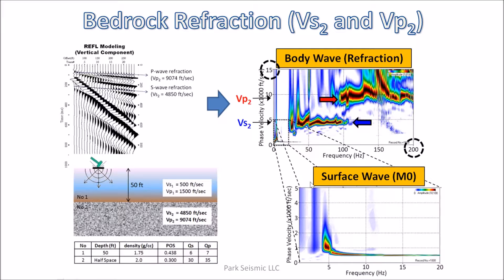We can identify two horizontal energy trends in this image, both of which indicate non-dispersive seismic events because the phase velocity does not change with frequency. One trend occurs at relatively low frequencies with relatively low phase velocity. The approximate phase velocity of this energy trend coincides with the shear wave velocity of bedrock, whereas the other coincides with the P wave velocity of bedrock, indicating they represent P and S wave refractions from bedrock.